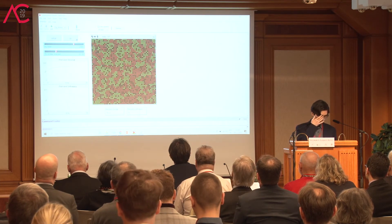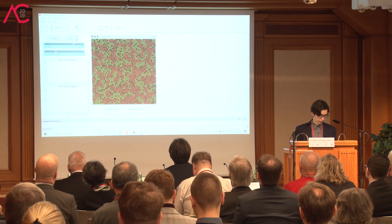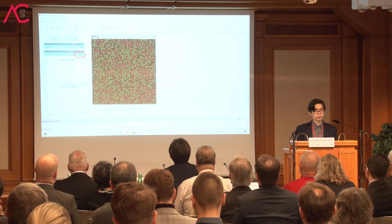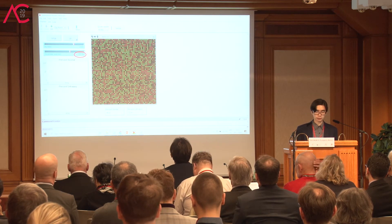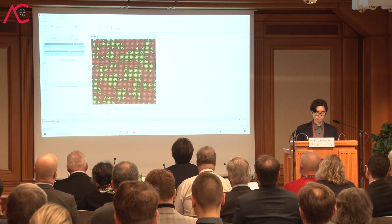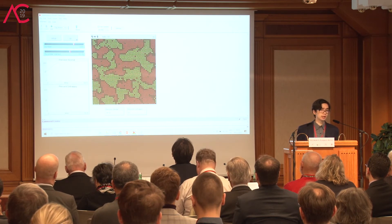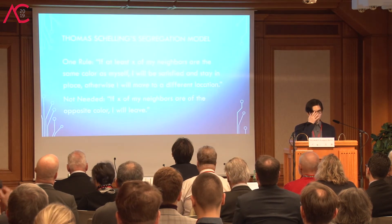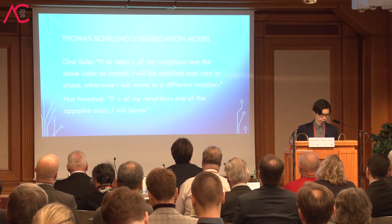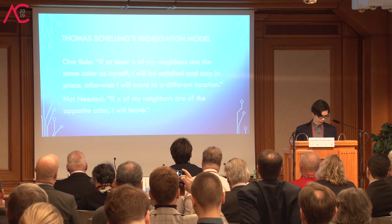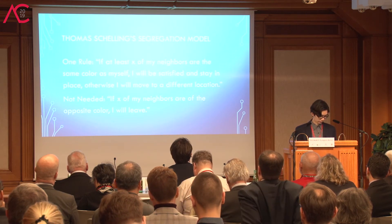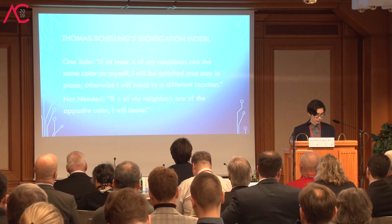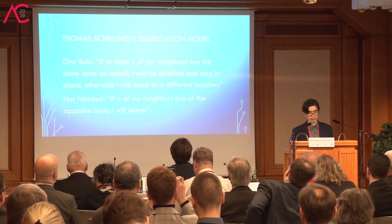When we let that run, at the end when all agents are satisfied we notice clumping and segregation. If we raise the value much higher to 65%, and let that run, we see stronger and more prominent segregation. Schelling showed that one rule is enough to cause segregated neighborhoods, even without any negative rule that discriminates against differently colored agents. This was a quite controversial model that generated a lot of research.